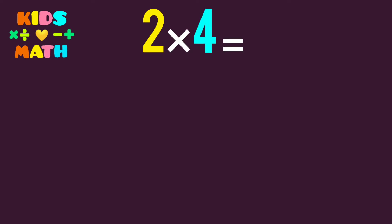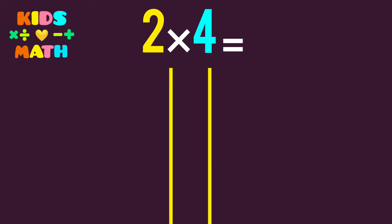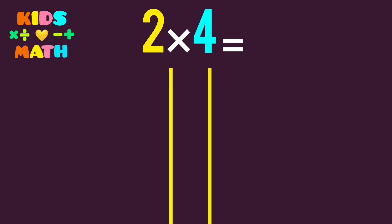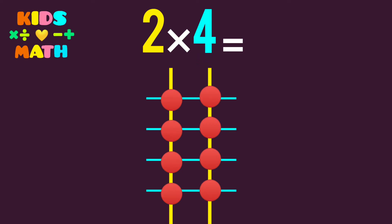The next: 2 times 4. The first number is 2, so we derive 2 lines: 1, 2. The second number is 4, so we derive 4 lines. Then we count the common points between the lines.